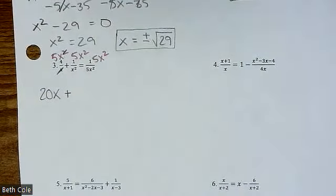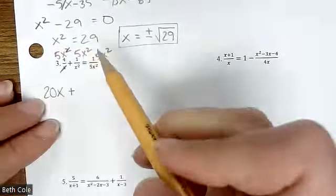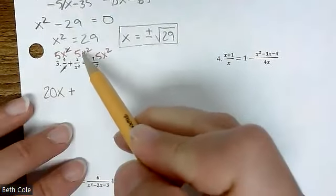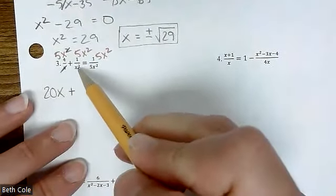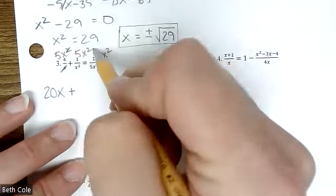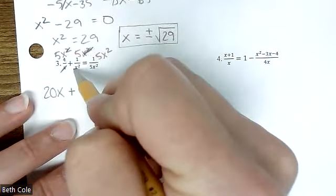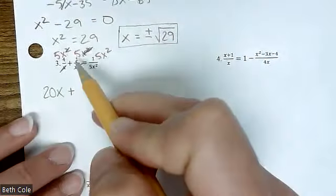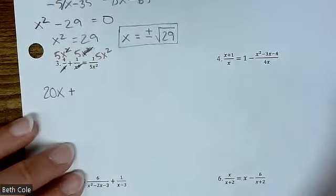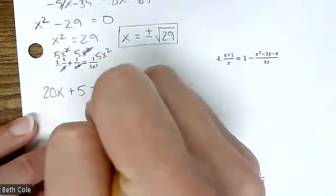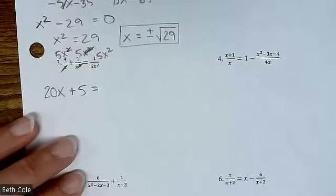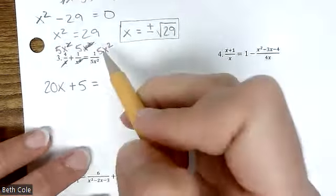Now we're going to do the one in the middle — you just do them one at a time. What cancels out for that one? What's left is five times one, which is just five. Equals sign.